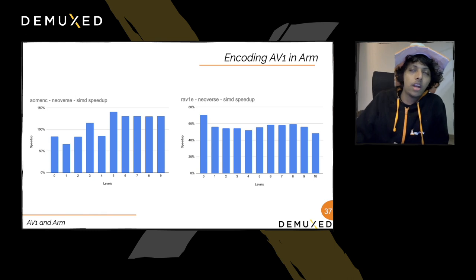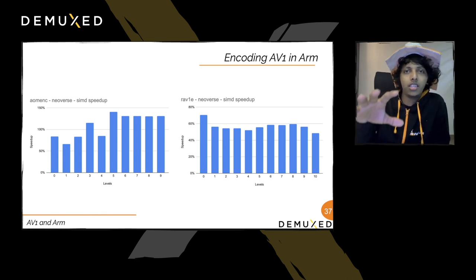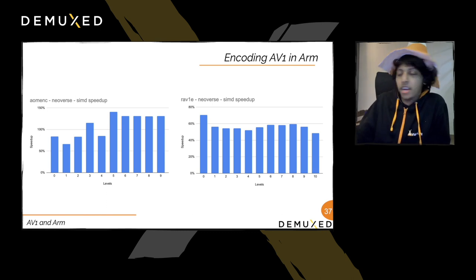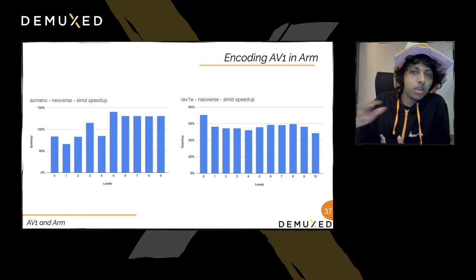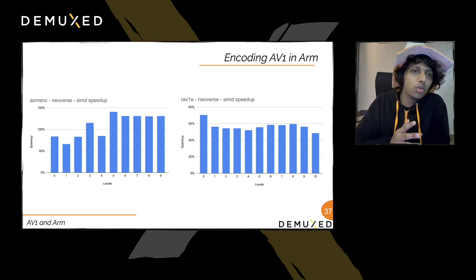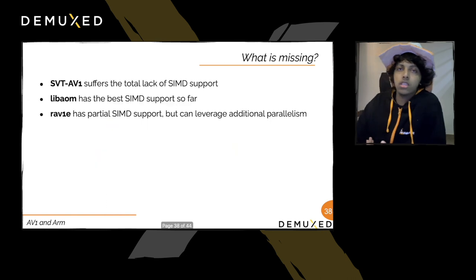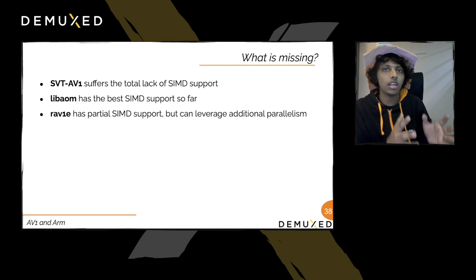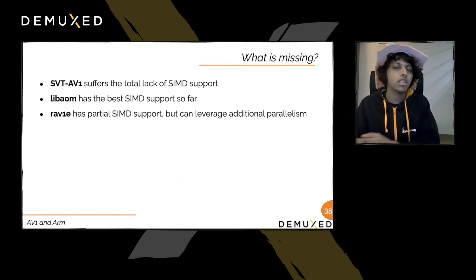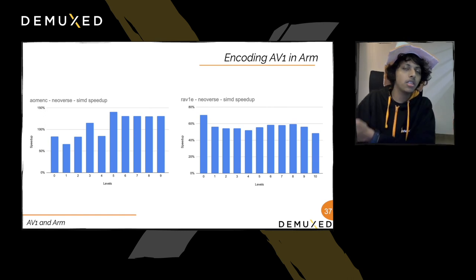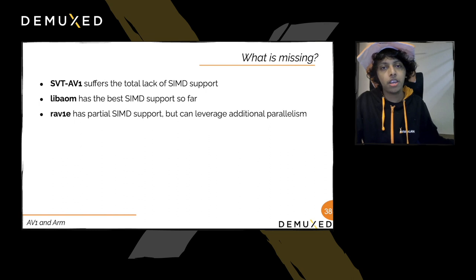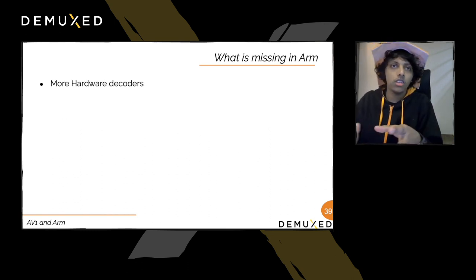Comparing speedups: with plain rav1e binary plus assembly, we get around 40% speedup, reaching 60-70% at speed preset zero. On Neoverse, speeds above preset 5 show over 100-150% speedup. For what's missing: SVT-AV1 lacks SIMD code paths for ARM; libaom has the best SIMD support so far (~100% speedup); rav1e has partial SIMD but not fully integrated.